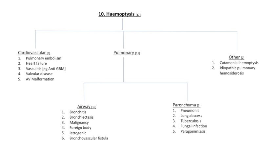As per the diagram, we can partition the different causes of hemoptysis into being either cardiovascular or pulmonary, and pulmonary we can further stratify in terms of airway and parenchyma. A good conceptual framework when attempting to describe conditions in the respiratory tract is to divide it into different sections — ask yourself whether the condition involves the airway, the parenchyma, the pleura, or the vasculature.